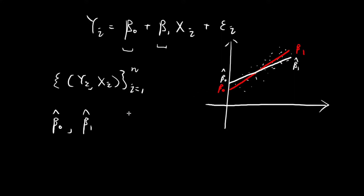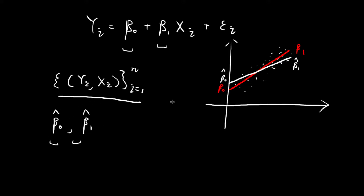There are many different ways by which we can obtain these constants. And depending on your method, you might get a different line — if you choose a very bad method, you might get a line that makes absolutely no sense. So the question now is: how do we obtain the best estimate of beta0 and beta1? Given the set of n data points we have collected, what's the best way to estimate beta0 and beta1 so that you get a straight line that's reasonably close to the true line?